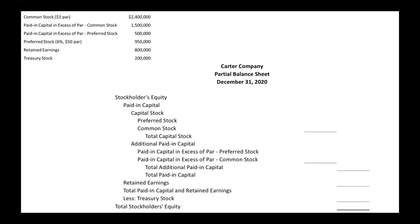This is what the stockholders' equity section of a balance sheet looks like. Before we start plugging in the numbers, let's review the format. Stockholders' equity is made up of paid-in capital and retained earnings added together, minus treasury stock. Paid-in capital is made up of capital stock — your preferred stock and common stock that you have issued — and additional paid-in capital, which includes paid-in capital in excess of par or stated value. You add capital stock and additional paid-in capital to get total paid-in capital.